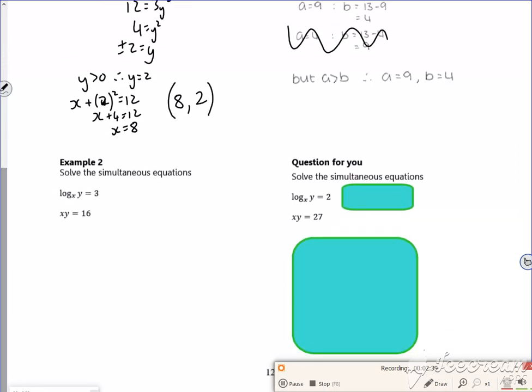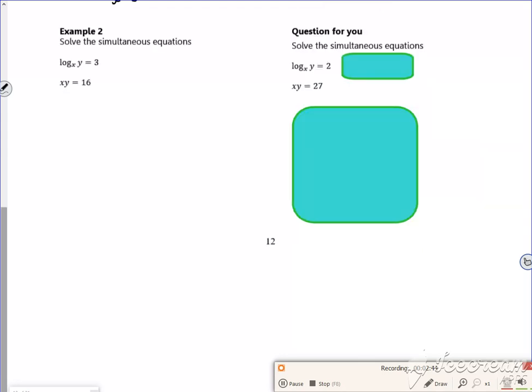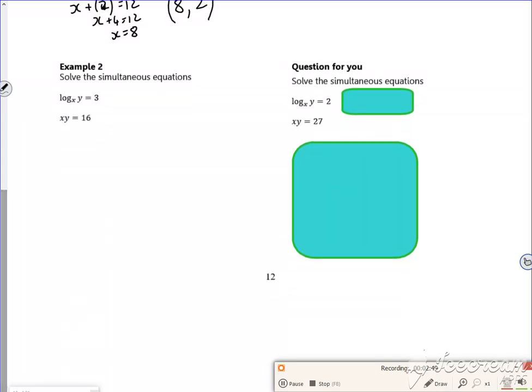Right, so look at this one. Similar idea. Let's try and sub one in something like that. Different ways of doing it. So let's replace, we could do this in one of two ways. I can either rearrange that as y equals 16 over x and then do x to the power of 3. Let's do that. The pack does it a different way, but let's do it this way.